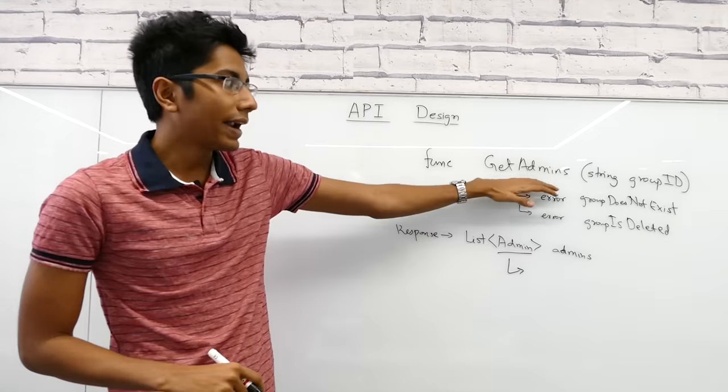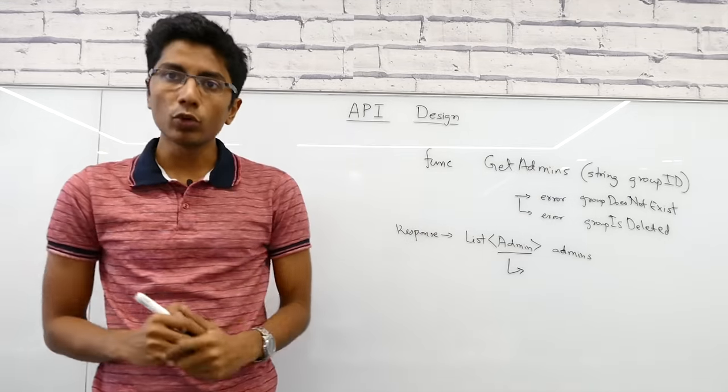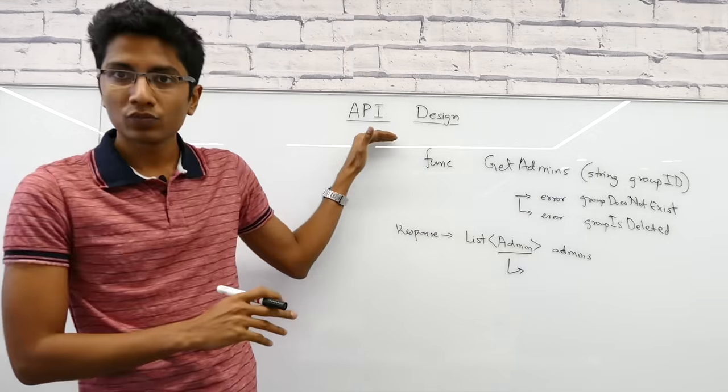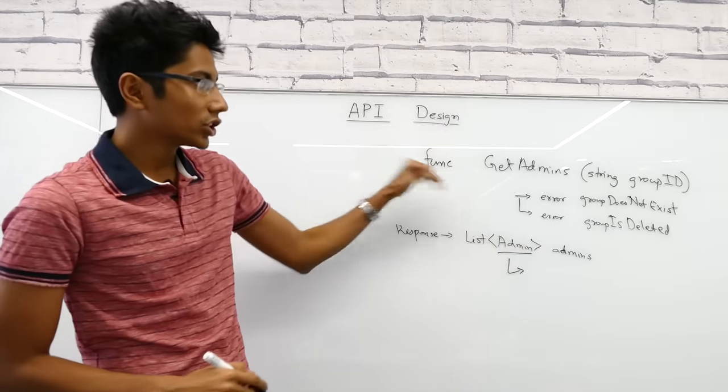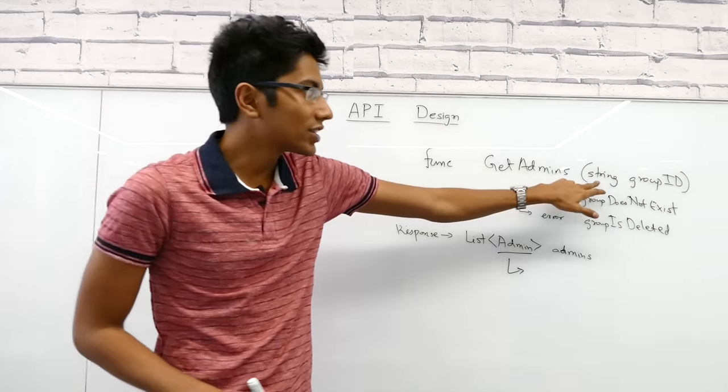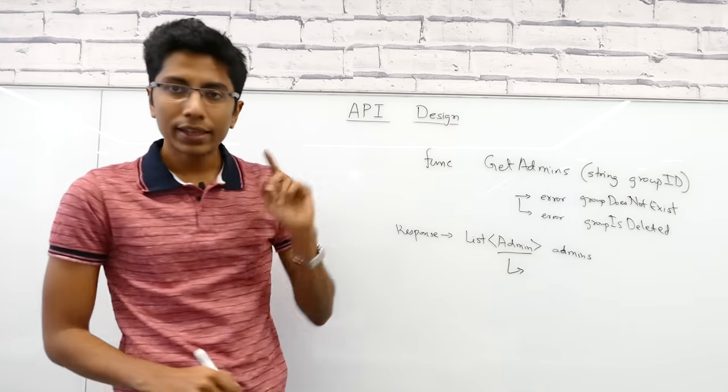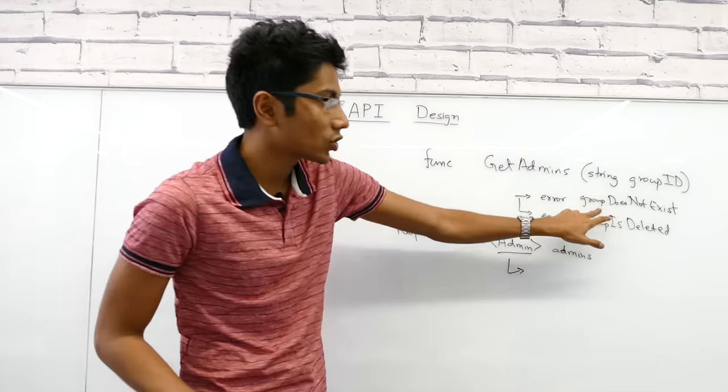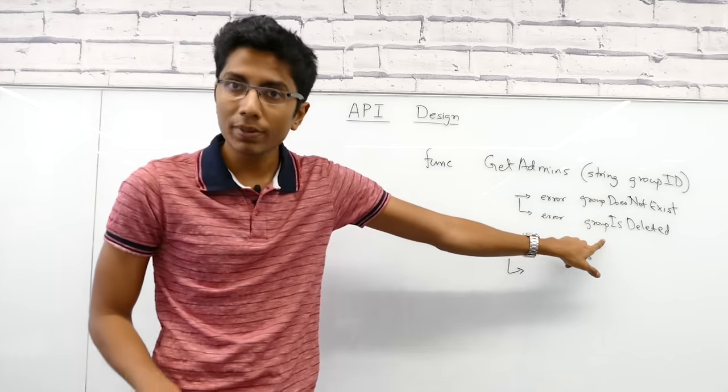Let's take an example. You need to find all the admins from a given WhatsApp group. What WhatsApp is going to expose is an API. It's a function where you need to call get admins with a string type of group ID. There are two possibilities of errors: first, the group ID does not exist, or the group has already been deleted.